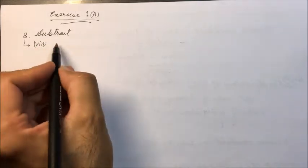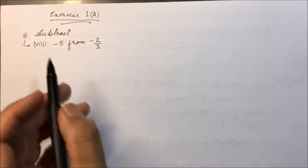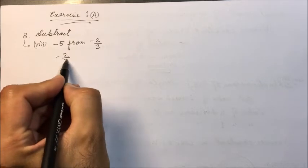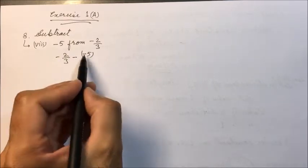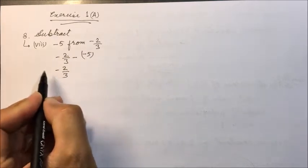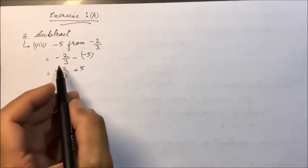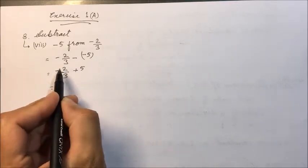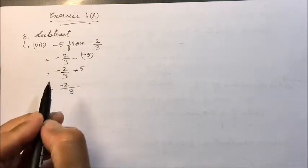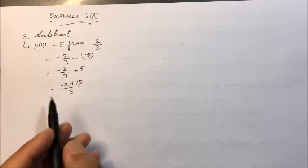The eighth question is: subtract minus 5 from minus 2 upon 3. So it is written as minus 2 upon 3 minus minus 5. Minus minus becomes plus, so it is minus 2 upon 3 plus 5. Taking LCM as 3, we get minus 2 plus 15, which gives 13 upon 3.